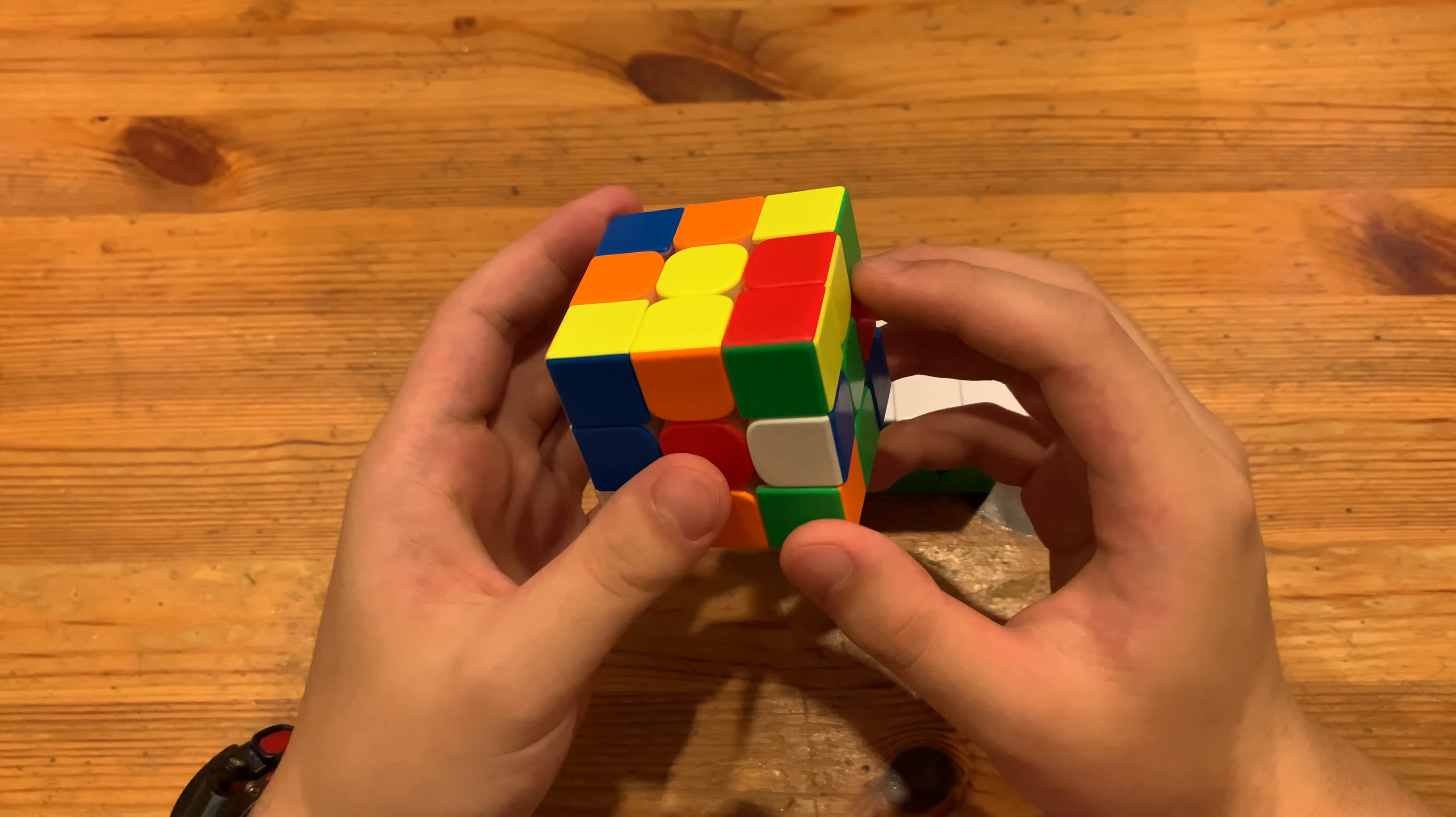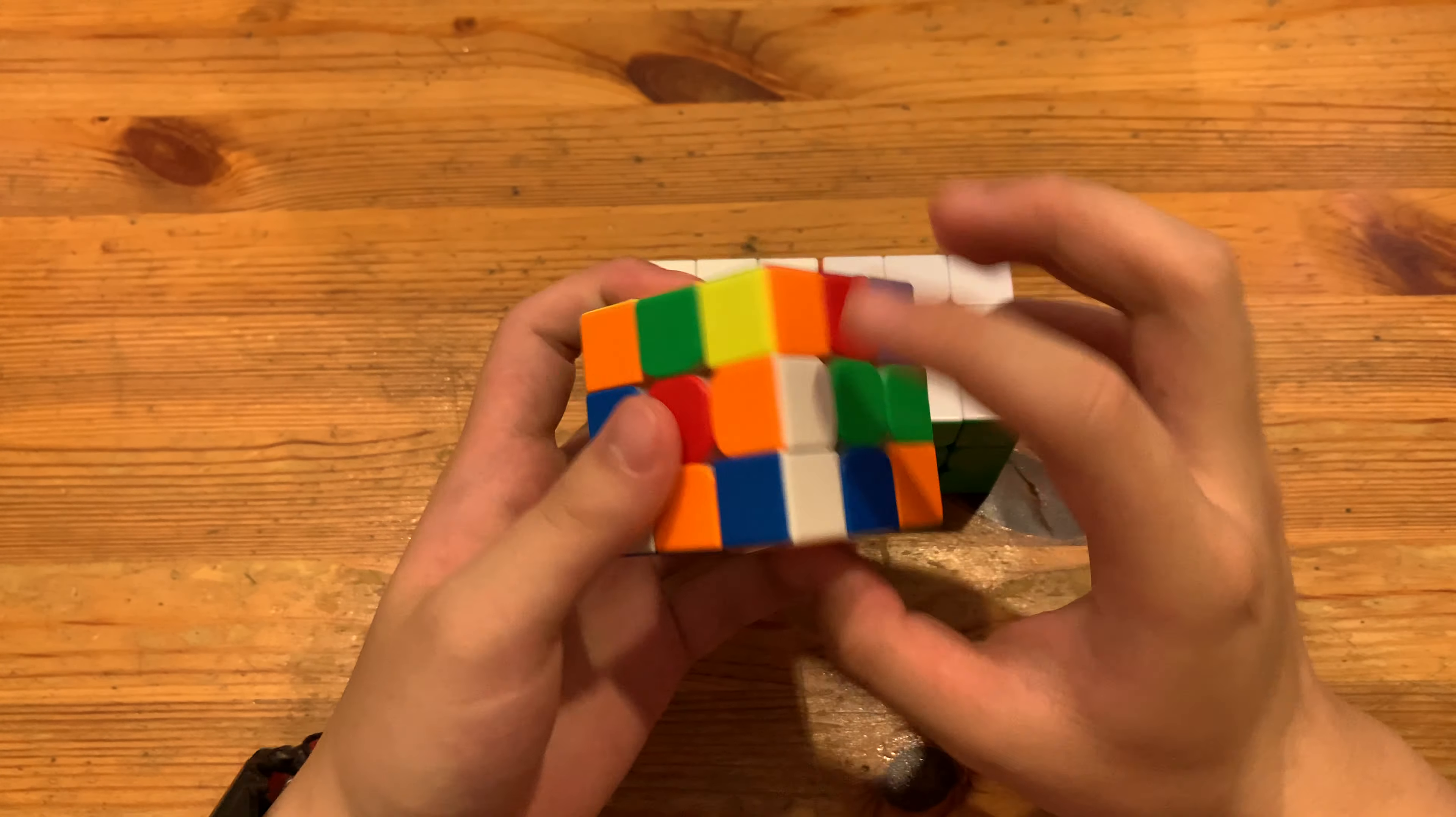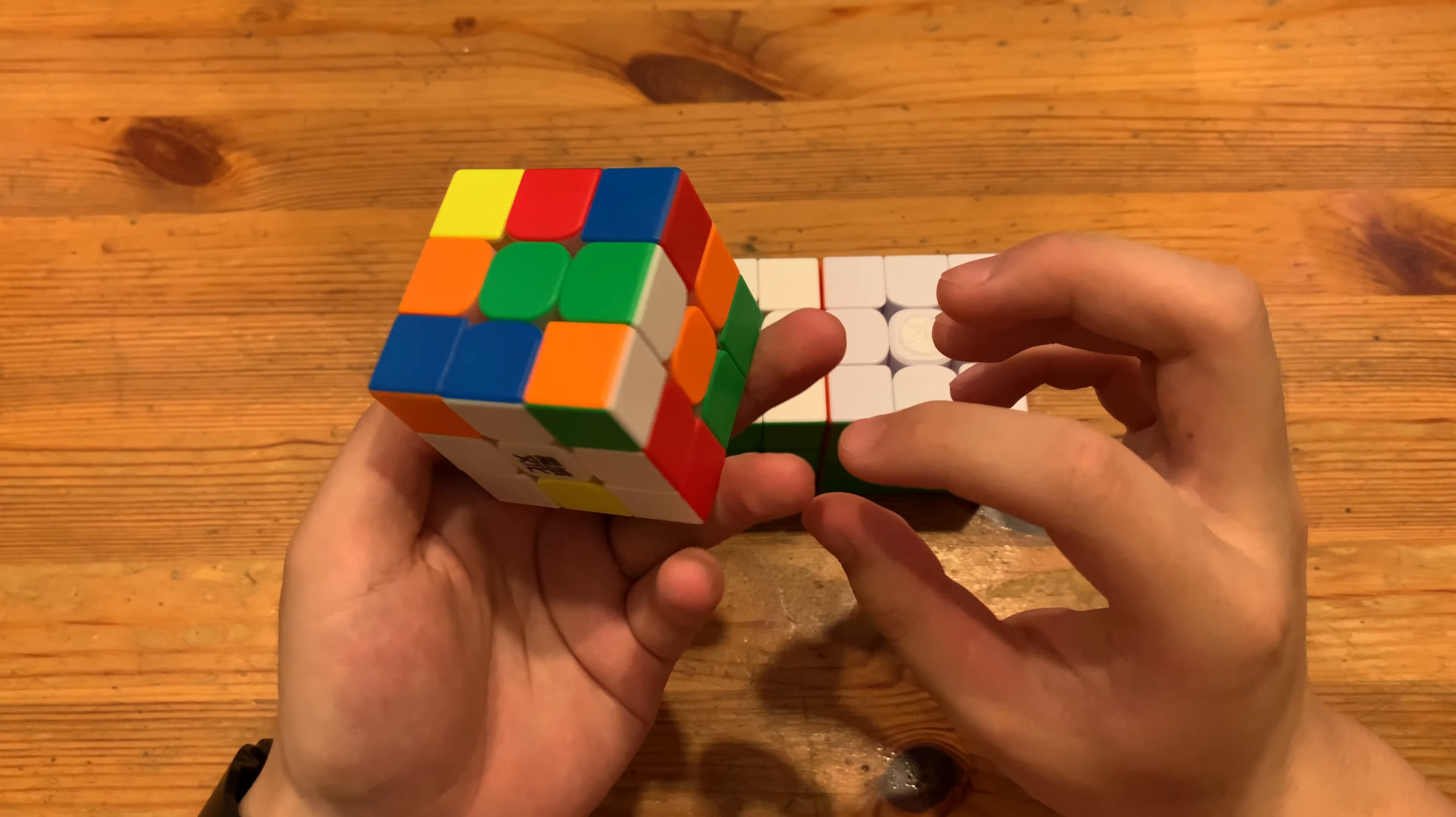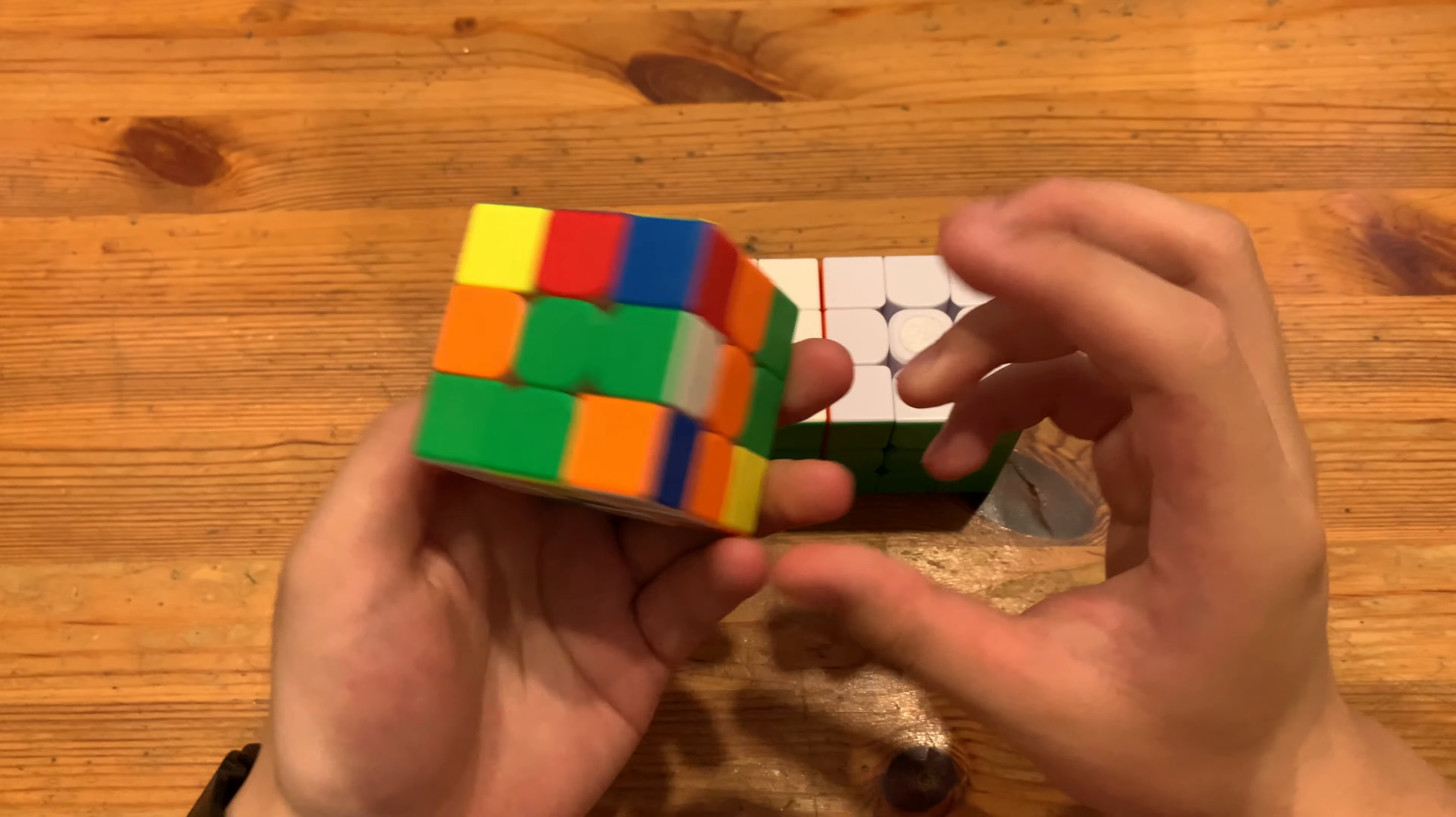So to solve cross, I'll just do U2 prime to put this orange piece over here. Insert blue and now orange is in place. So I can insert with one move and then D2 to put these three edges in position.